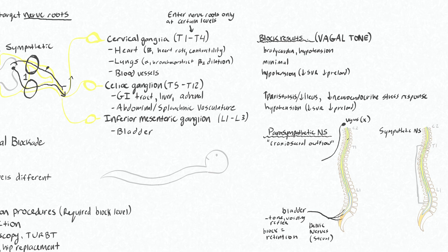Everything else in the middle — your heart, your lungs, your GI tract, etc. — receives its parasympathetic innervation from the vagus nerve, which you will not block with a neuraxial technique. Unless your spinal is so extremely high that it reaches up to your cranial nerves, you will not get parasympathetic vagal blockade.